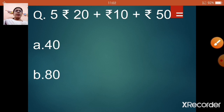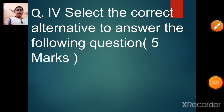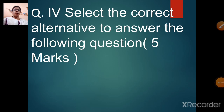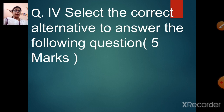Now our next question is: select the correct alternative to answer the following question. This is your fourth head question — also of 5 marks. So filling the blanks 5 marks, true or false 5 marks, tick the correct option 5 marks, and select the correct alternative 5 marks — making it a total of 20 marks paper.